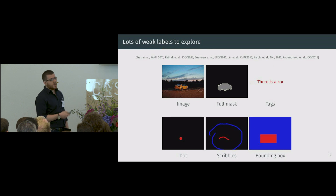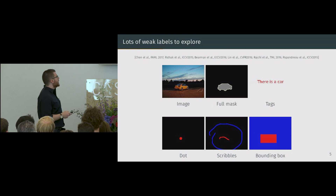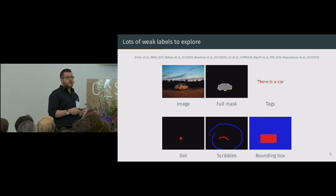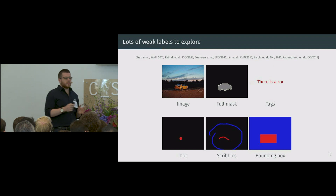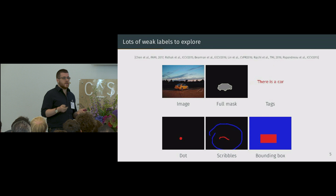There is a lot of work in computer vision in this direction, but a little less in the medical field. Our reasoning is that all those weak labels contain location information about the object, but not information about its shape, its size, or what it looks like.